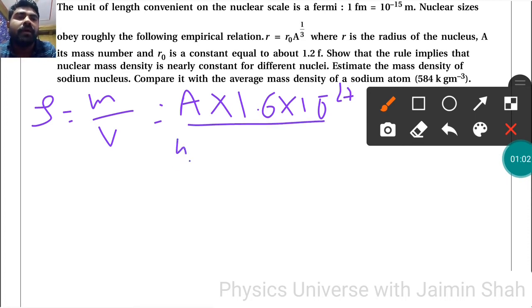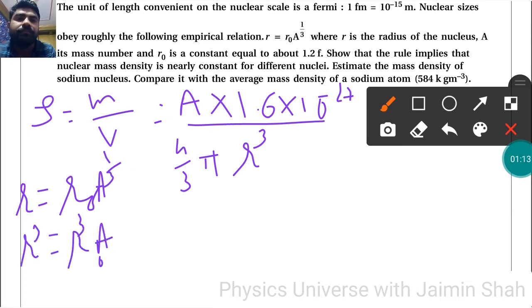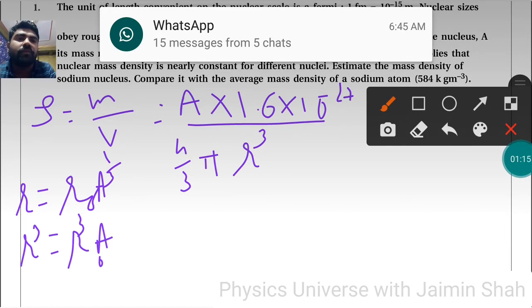Upon volume. Volume is 4/3 π r³. Now r is given as r = r₀A^(1/3), so r³ = r₀³A. Put this formula here.